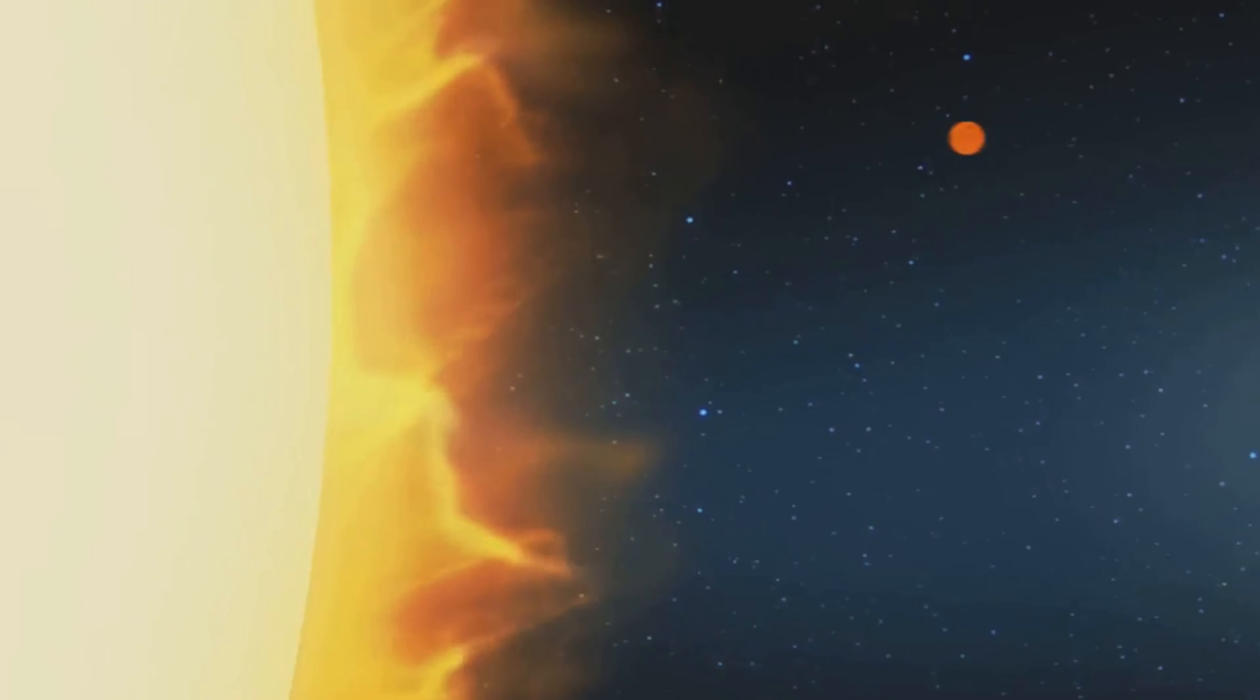Earth, our cozy home, completes a spin on its axis in 24 hours and dances around the sun in 365 days.